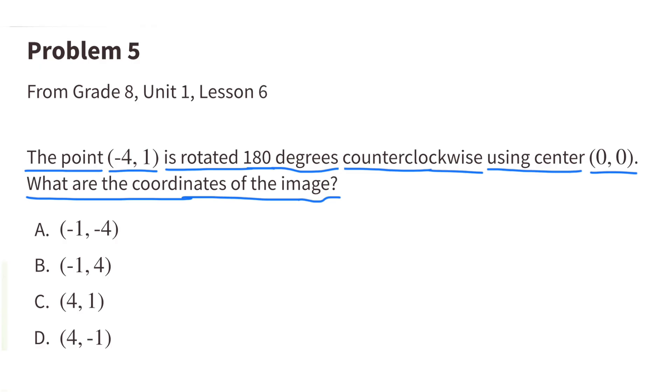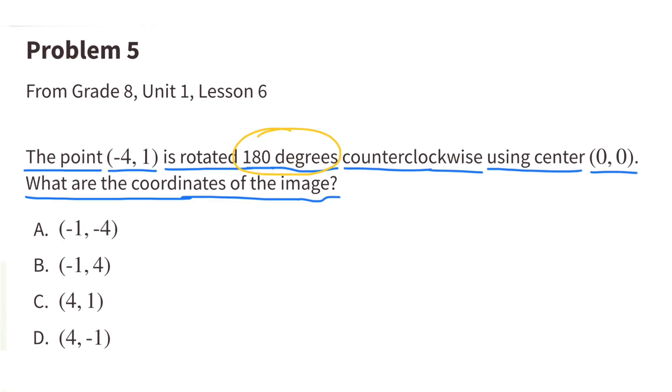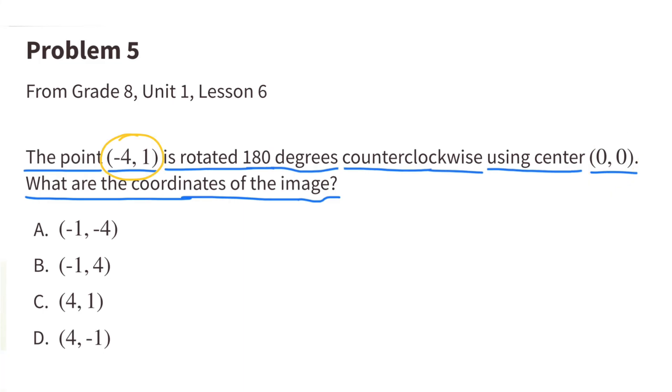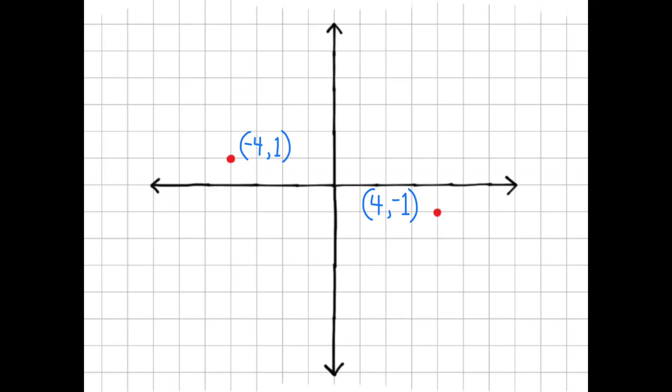Number 5. The point negative 4 and 1 is rotated 180 degrees counterclockwise using center 0, 0. What are the coordinates of the image? A key piece of information is the 180 degree counterclockwise rotation using center 0, 0 and the point negative 4, positive 1. The center point would be 0, 0 which is where the origin is.